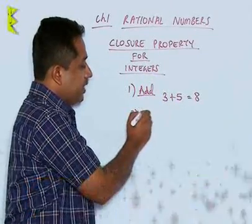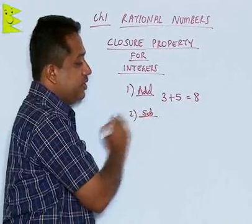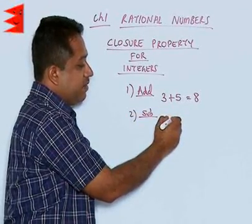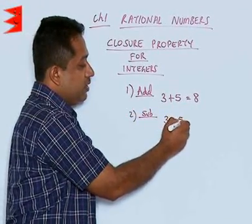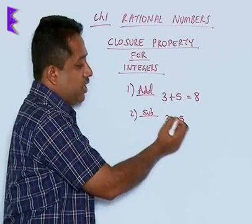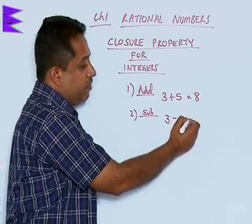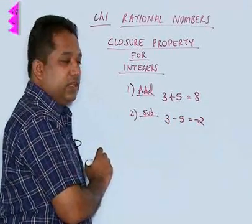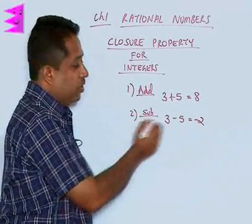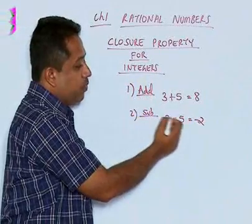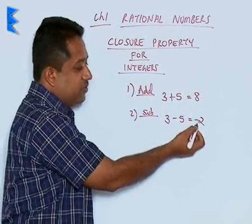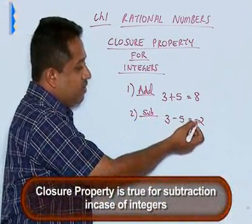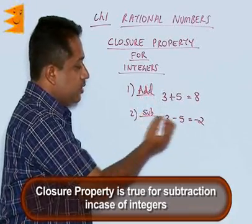What about subtraction? When we subtract two integers, let us say 3 and 5, so 3 minus 5, we are going to get minus 2. Now, minus 2 is an integer because integers include positive numbers as well as negative numbers. So, in subtraction also we find that the closure property holds good.